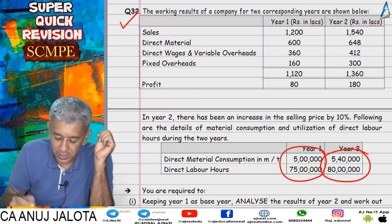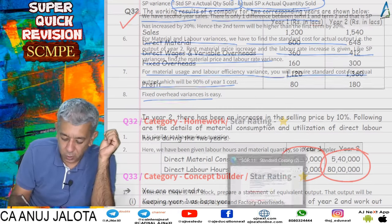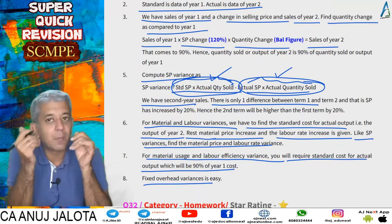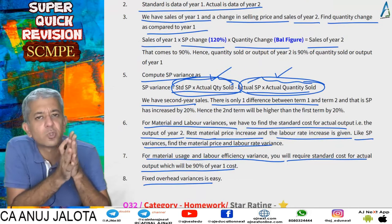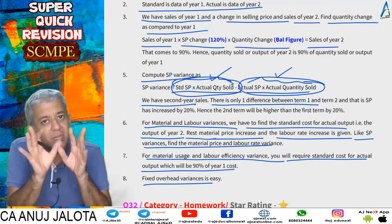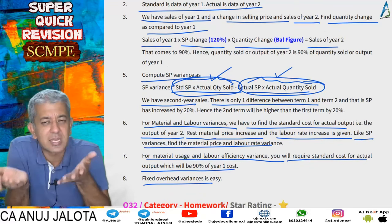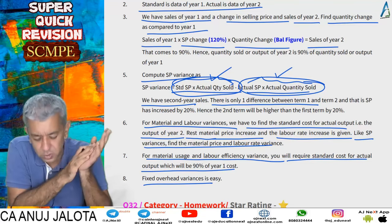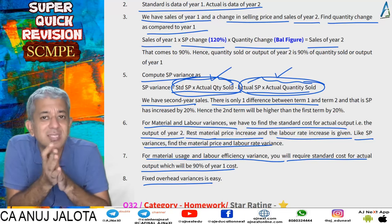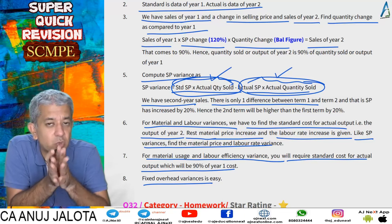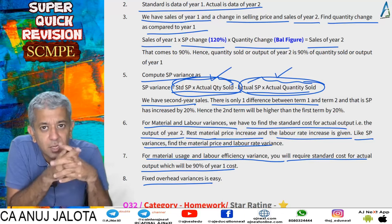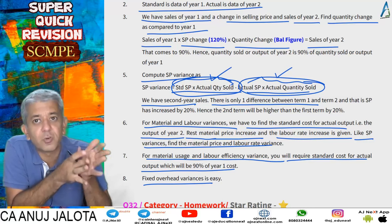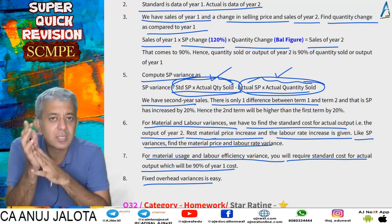With question 32, we finished all questions involving the usual variances. The next topic to start is what happens when there are material stocks, WIP stocks, and finished goods stocks. I'll see you all in the next lecture. Notes for these lectures come first on our Telegram channel, and then at other places. Videos also come first on Telegram.